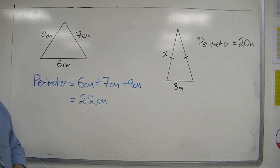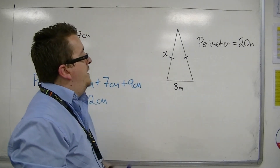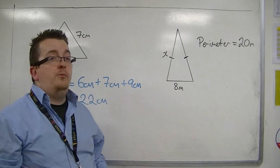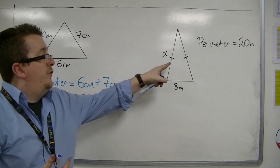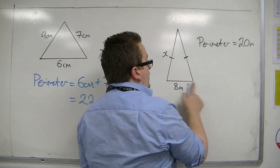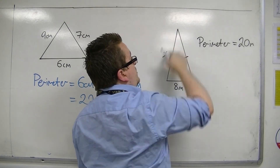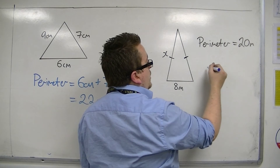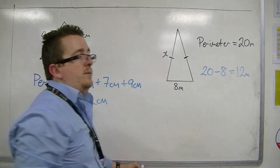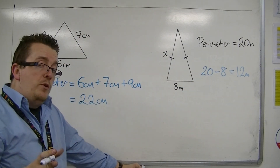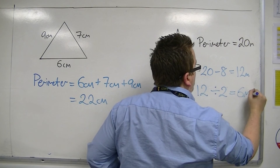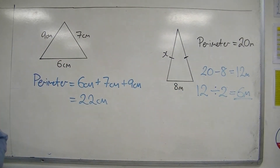If you had a problem like this, where we already know the perimeter but we need to find one of the missing sides, we've been given an added bit of information in that this must be a special type of triangle. It's an isosceles triangle, because we have two sides the same length. So we know that if one side is eight metres and the whole thing is twenty metres, then what we have left would be twenty take away eight, so twelve metres. These two sides must be twelve metres between them, and because they are both the same length, we only need half of that, so x must be six metres.